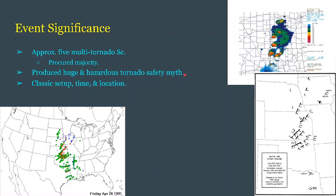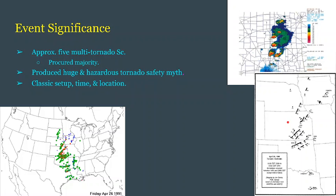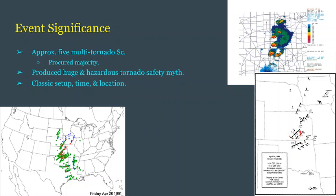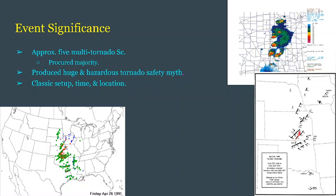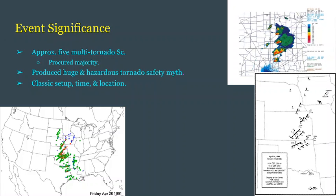Aside from that myth, the tornado tracks are shown here again. There were around five multi-tornado supercells that easily accounted for the majority of the 55 tornadoes, with one of those producing the F5. It's visible right here in the middle of a supercell track. That's all for this video — thank you so much for watching to the end, and I'll see you in the next one.